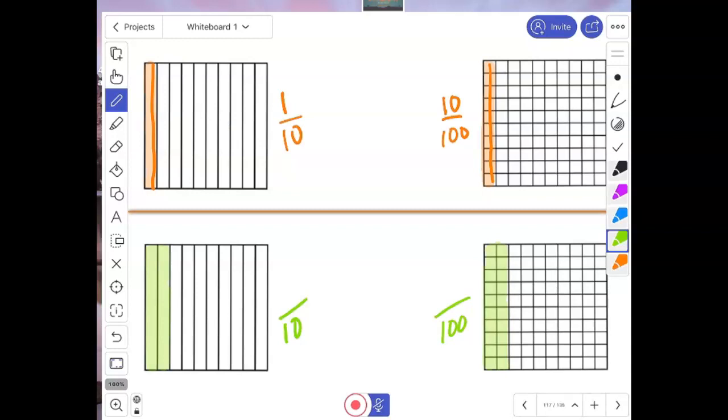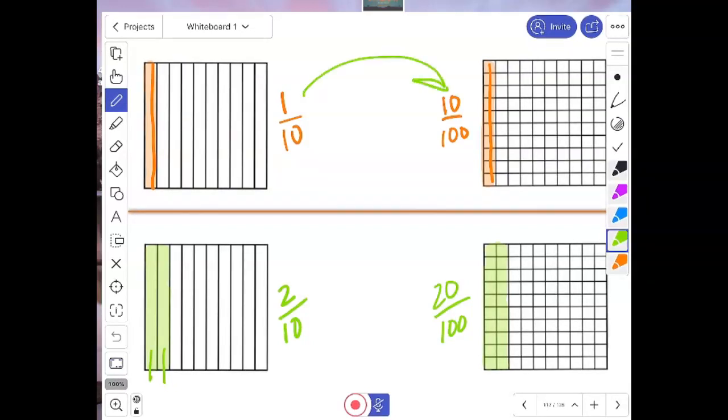What do you notice? I see that I've got one, two rods, but I have 20 little cubes, or little squares. What do you notice about that? Are you making a generalization between these two numbers and perhaps these two numbers? Let's keep going.